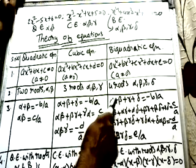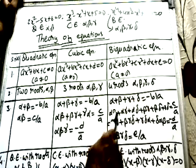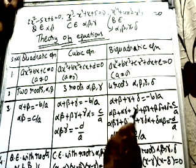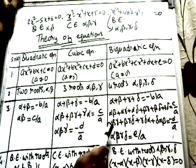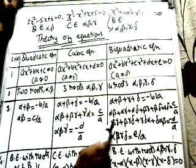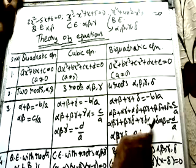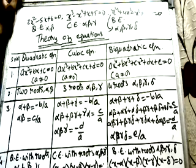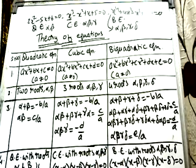When we have four roots, we have four formulas: α + β + γ + δ = -b/a; αβ + βγ + γδ + αγ + αδ + βδ = c/a; αβγ + βγδ + δαβ = -d/a (sum of triple products); and αβγδ = e/a (product of all four roots).